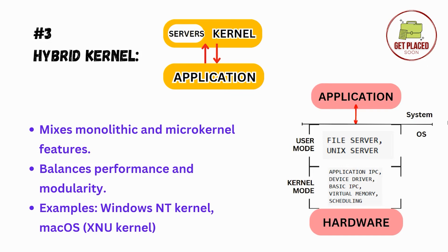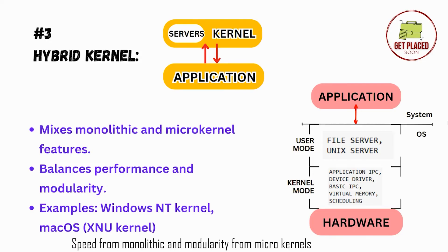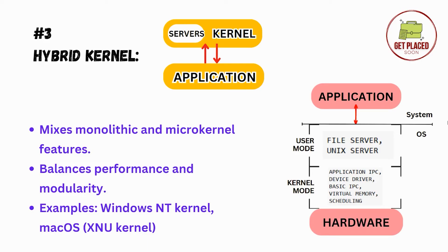Hybrid kernels mix monolithic and microkernel features, balancing performance and modularity. Hybrid kernels borrow speed from monolithic kernels and modularity from microkernels — all the best parts of both kernels are combined. The best version is built based on needs. Examples are Windows and macOS kernels.